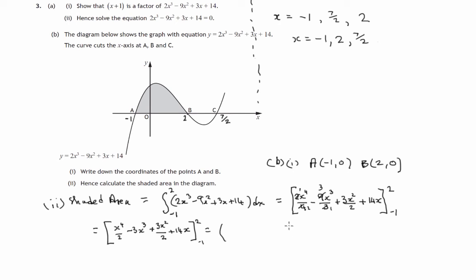And we have to plug in these two values. So first of all, we'll plug in 2 into this and then take away the value of the whole thing when x is negative 1. So first of all, 2 goes in. So we've got 2 to the power 4 over 2 minus 3 times 2 cubed plus 3 times 2 squared over 2 plus 14 times 2.